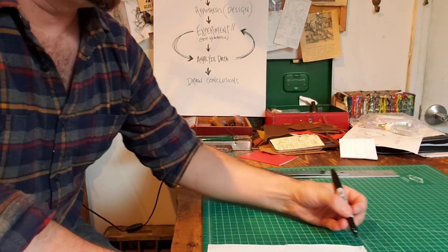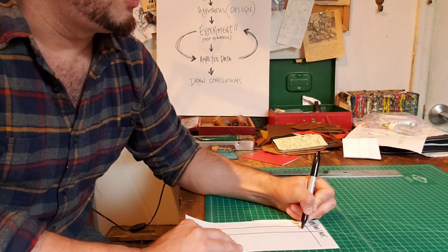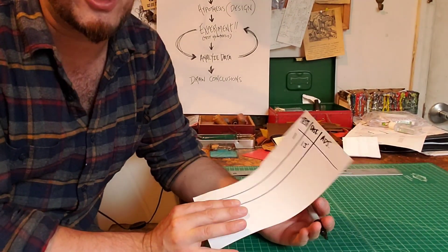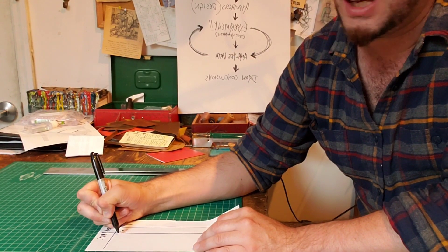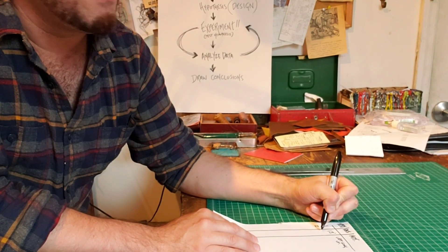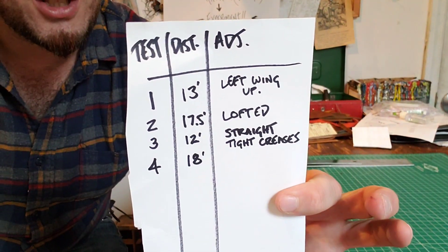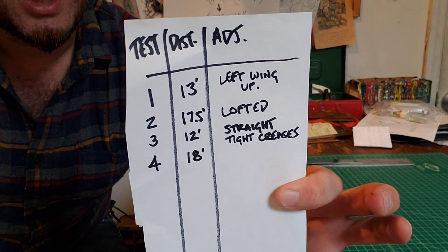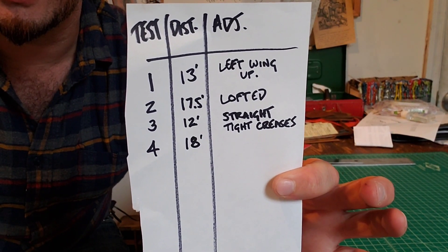As I'm experimenting, it's probably a good idea to track my results, so I'm going to make a simple chart. Test number one: mine flew 13 feet, which is pretty terrible if we're going to be honest with ourselves. At the end of test number one, I bent up my left wing. After I did that I flew it a second time — test number two — and it went much further. I actually got 17 and a half feet out of it. That's all my tracking data looks like. I'm not a scientist, but this data let me know what I did wrong and what I did right.